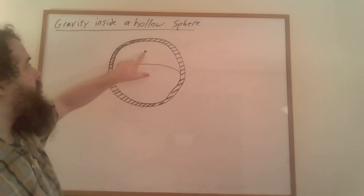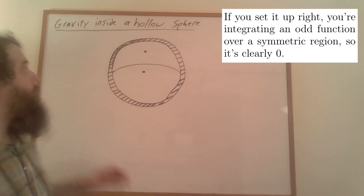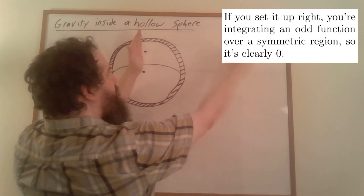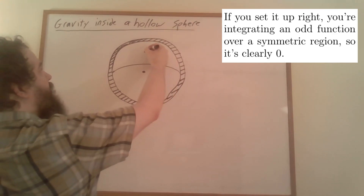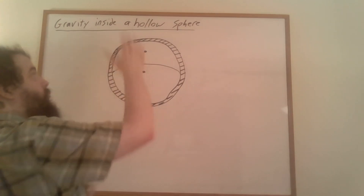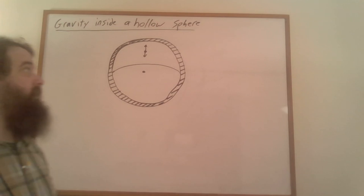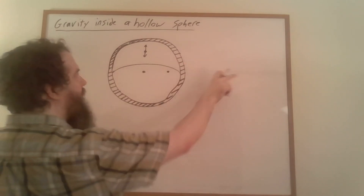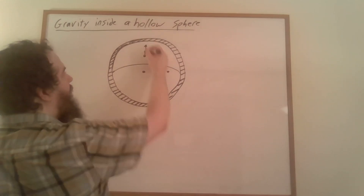To make things simple, let's suppose that the point we're interested in is directly above the center of the sphere. By symmetry, the amount that the left side of the sphere pulls to the left and the right side of the sphere pulls to the right are going to balance each other out. So there isn't going to be any net gravitational force in the left or right directions, and similarly no net gravitational force into or out of the board. The force of gravity is going to be exclusively either upwards or downwards.